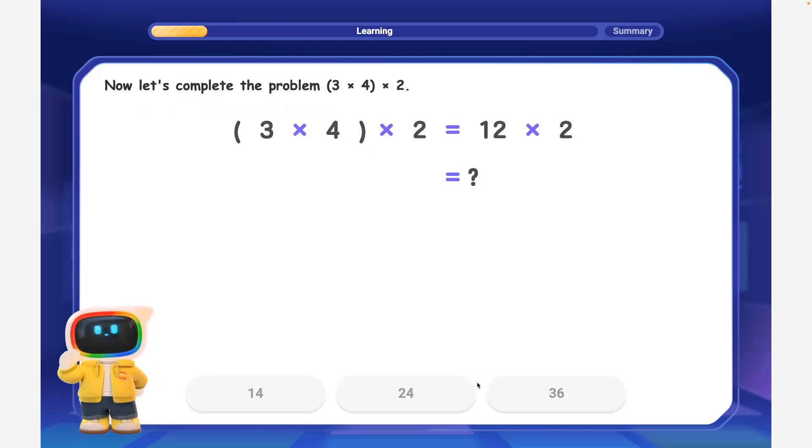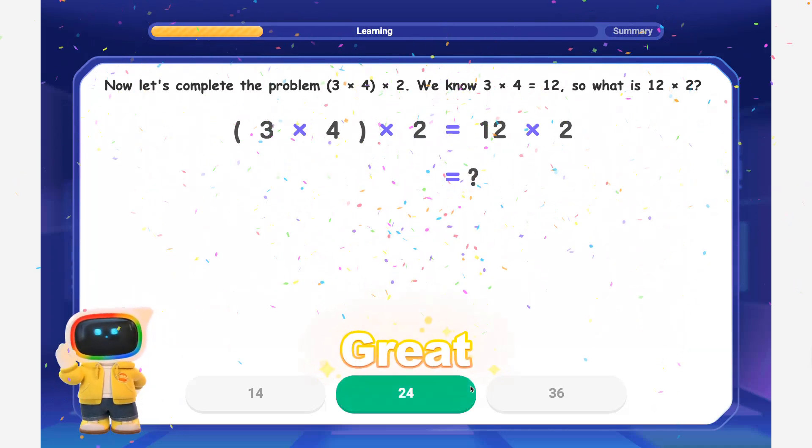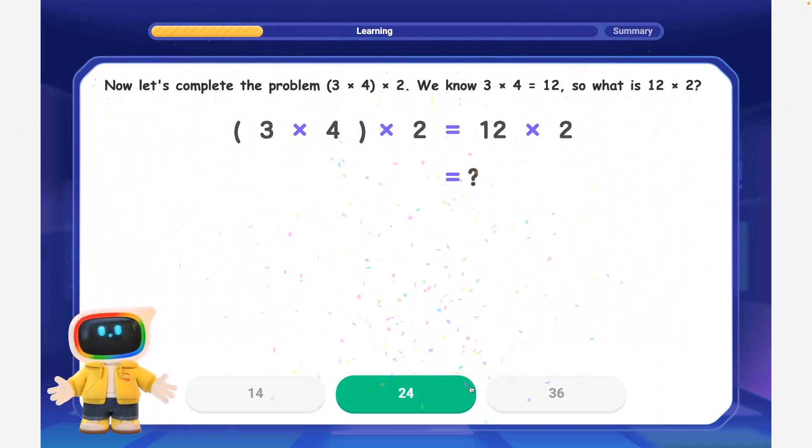Now let's complete the problem. 3 times 4, times 2. We know 3 times 4 is equal to 12, so what is 12 times 2? Perfect! 12 times 2 is equal to 24, so 3 times 4, times 2 is equal to 24.